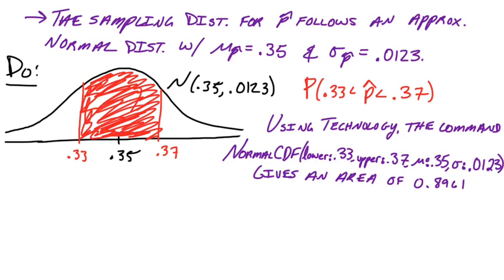So we are all good for the do step. Drew a curve, we showed that it was normal, we shaded what we wanted to find, and we gave the calculation statement. So lastly, we just need to conclude our answer, and our answer is really this 0.8961 thing.